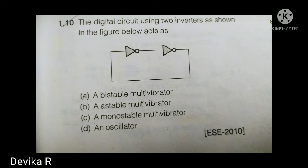The first question shows a digital circuit using two inverters connected back to back. This is called a bi-stable multivibrator. If there is an odd number of inverter gates, it's an astable multivibrator. If there is an even number of gates — two, four, six, and so on — it is a bi-stable multivibrator. Here two gates are given, so the answer is bi-stable multivibrator.